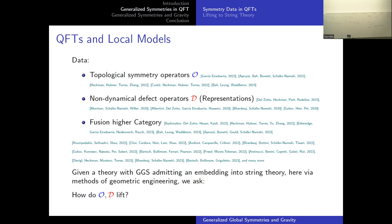The full categorical structure — there are various bits and parts which are known — but the full story is not understood yet; it's in development. So the question we're asking is: if we have a QFT which can be engineered, in this case purely geometrically, in string theory, how do these symmetry operators and defect operators lift?